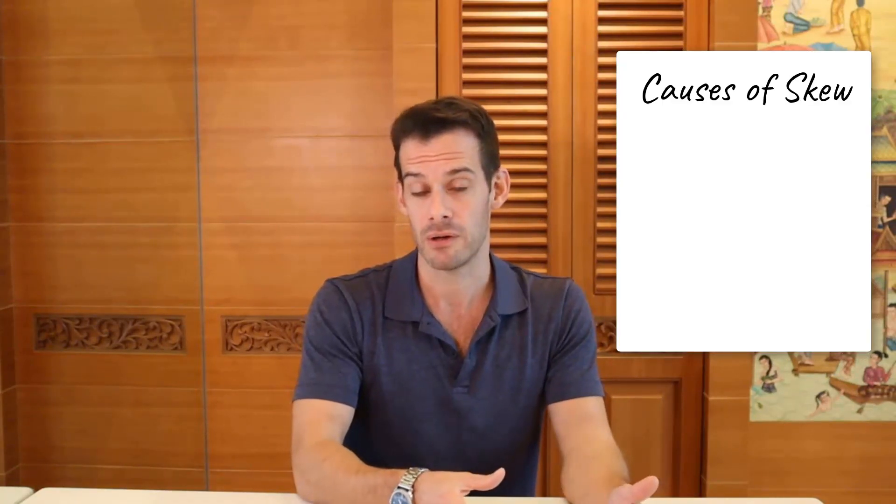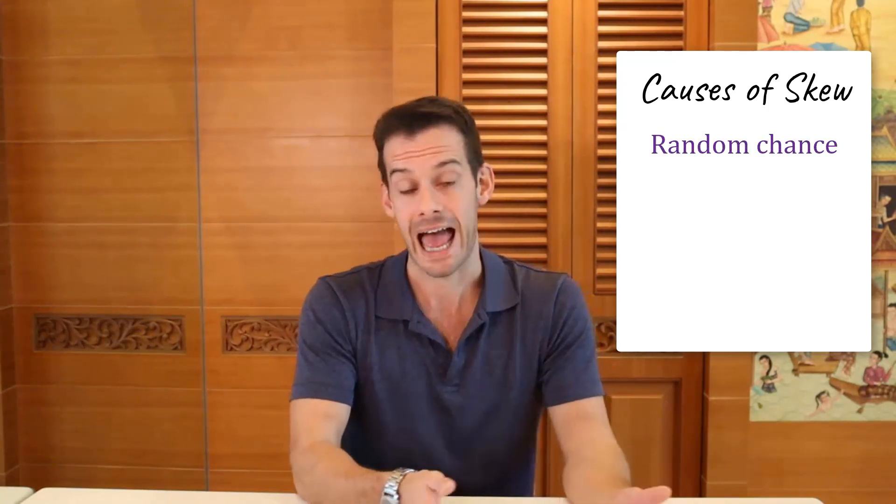Hi, I'm Michael Correa and this is Psych Exam Review. In the video explaining positive and negative skew, I mentioned that we might see skew in our sample because of random chance, so we could have a normally distributed population but we just happen to get a sample that shows skew.